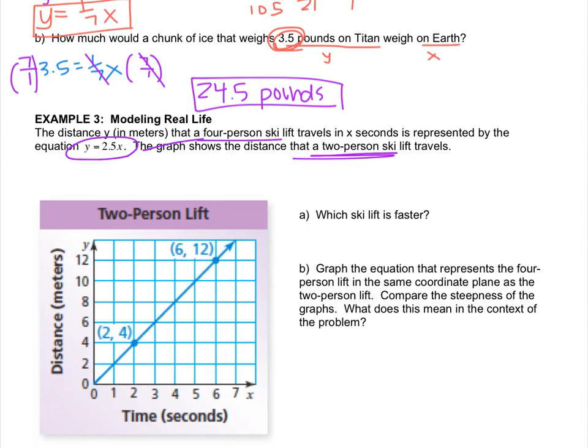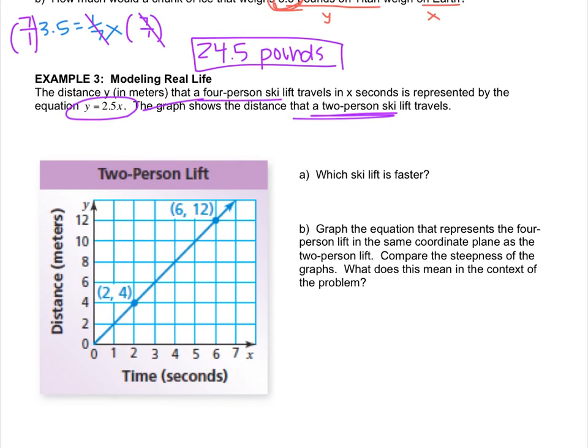We have to figure out which ski lift is faster. What we can do is we can either find the slope of this line of the picture, or we can graph our equation on the grid. I'm going to find the slope of the line, because that's easier for me, but you can do whatever you want.